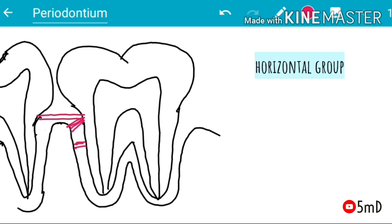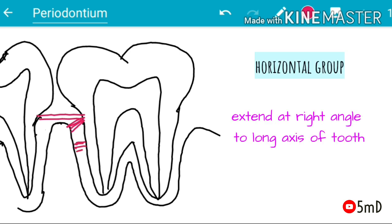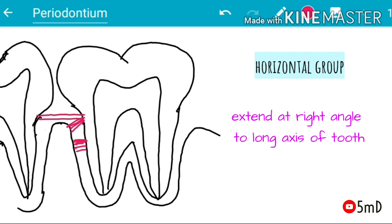The next group is the horizontal group of fibers. They are oriented at right angles to the long axis of the tooth, running from the cementum to the alveolar bone.